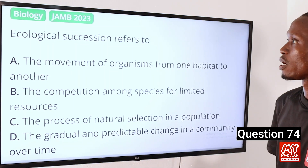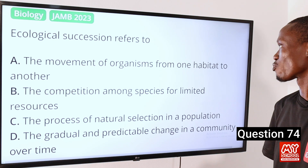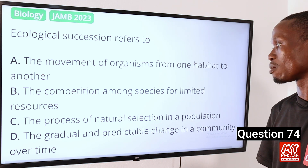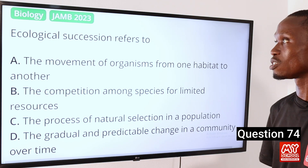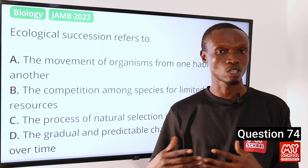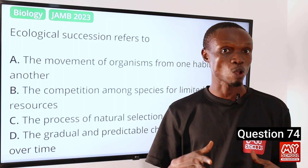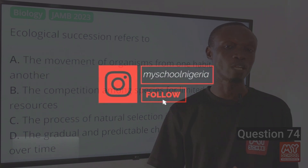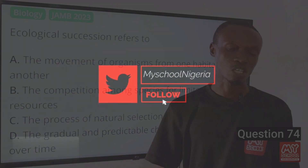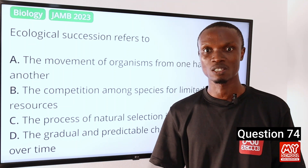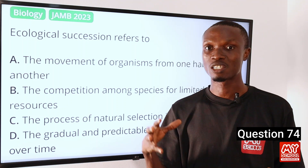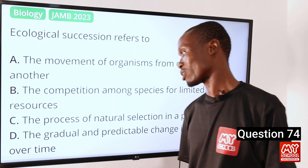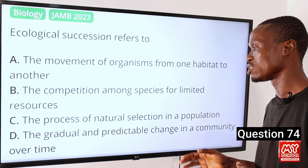Question 74: Ecological succession refers to A: the movement of organisms from one habitat to another. B: competition among species for limited resources. C: the process of natural selection in a population. D: the gradual and predictable change in a community over time. Ecological succession can be primary or secondary. It is primary when it occurs in an area where no previous community has existed, such as on bare rock or after volcanic eruption. It is secondary when it occurs in a place where a previous community has been disturbed, such as after a forest fire. The community gradually changes in composition leading to a more stable ecosystem. So option D is the correct option.